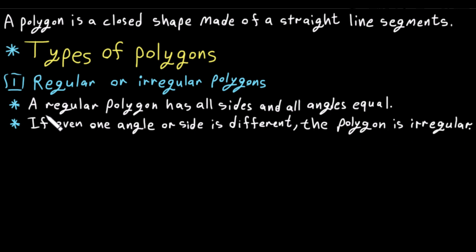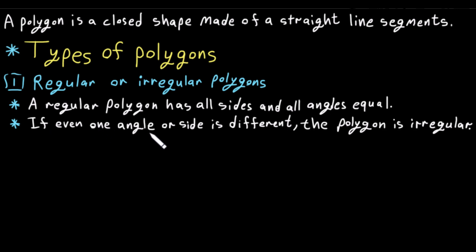A regular polygon has all sides and all angles equal. Otherwise it is irregular. To illustrate: if even one angle or side is different, the polygon is irregular.